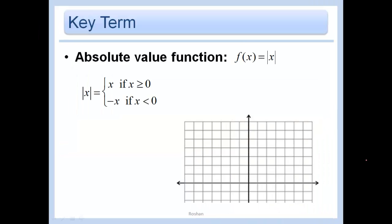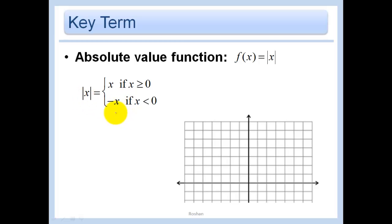As we talked about in the previous lesson, the absolute value function f(x) equals absolute value of x can be represented by the piecewise function. Its definition is different. If the value of x is positive or 0, then the absolute value of x is just x itself. But if the x value is negative, then the absolute value of x is the opposite of x. That's why negative 2 and negative 1 were upset, and the comic 3 was just fine with things.